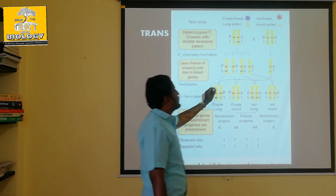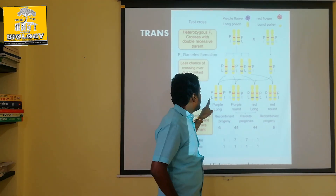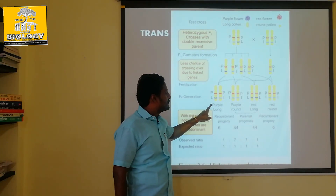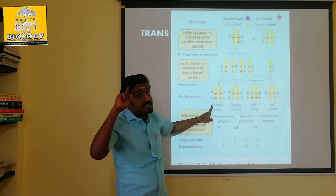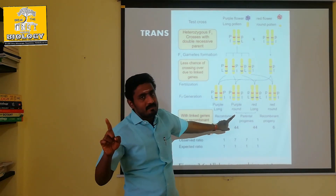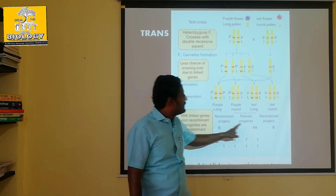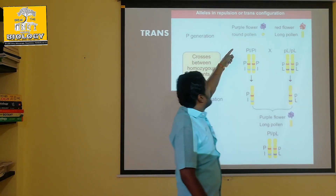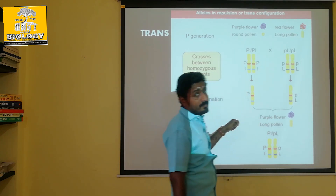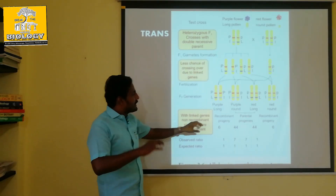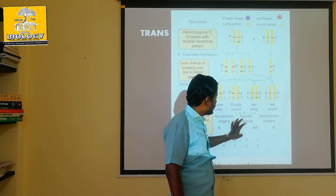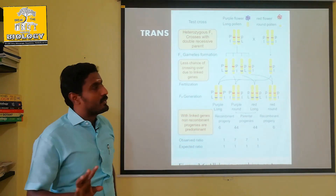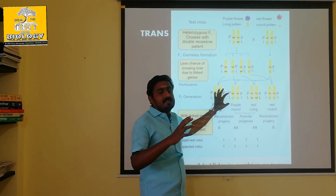So you can fuse the gametes. What is the result? The purple long. The red round is a parent. That's why this is a 4:4 ratio. What are the parental characters? The purple flower is round, the red flower is long. You can see that the purple flower is long — this is the parent's character. The other character is a recombinant.